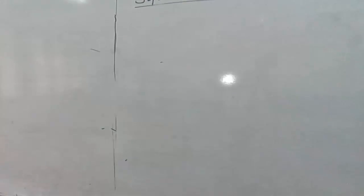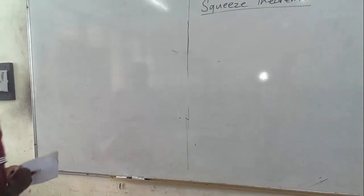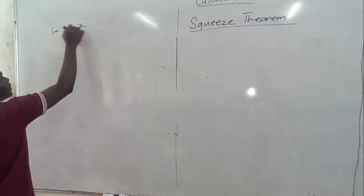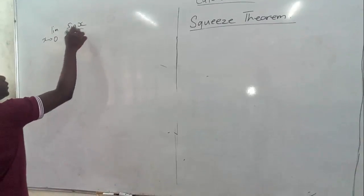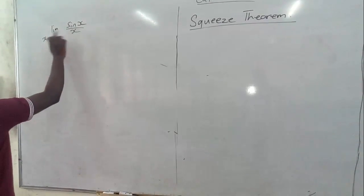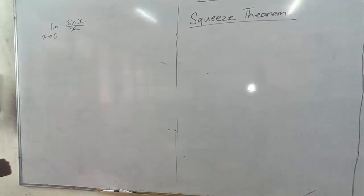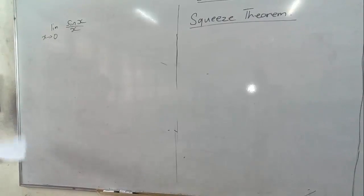We want to find the limit of sine x over x as x approaches zero. We did that intuitively some time ago, but we want to use the Squeeze Theorem for that as well. We are finding the limit of sine x over x as x approaching zero. We know that we can't use the direct substitution method because when we substitute zero for x we get an expression divided by zero, which is undefined. So to get the limit we use the Squeeze Theorem, but here we don't have any other functions to help us.